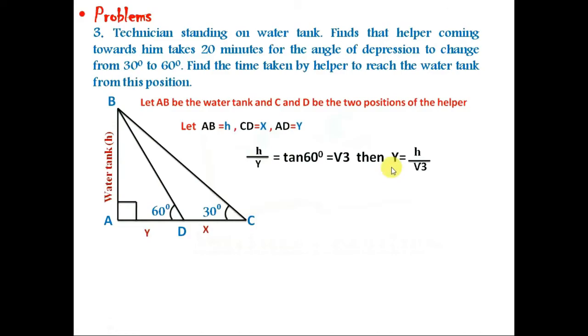If we consider angle ABC, then H by X plus Y equals tan 30°. We are considering this angle at C. H by X plus Y equals 1 by root 3, then X plus Y equals root 3 H.